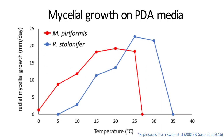This graph shows mycelial growth at various temperatures. Temperatures are on the x-axis and mycelial growth on the y-axis. The red line is Mucor piliformis and the blue line is Rhizopus stolonifer. As you can see, Mucor piliformis can grow at low temperature, even from 0 degrees Celsius to 5 degrees Celsius, but Rhizopus cannot grow below 5 degrees Celsius. Mucor piliformis cannot grow over 27 degrees Celsius, while Rhizopus stolonifer can grow until 35 degrees Celsius.